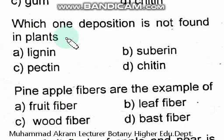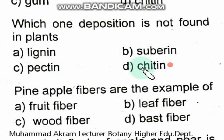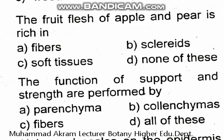Which deposition is not found in plants? Lignin, suberin, pectin, or chitin? Lignin, pectin, and suberin are found in plants, while chitin is absent. Pineapple fibers are examples of fruit fibers.